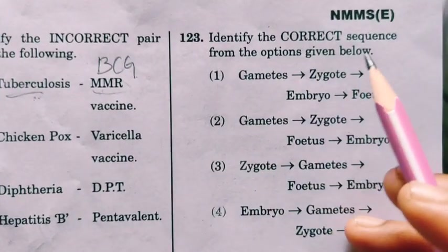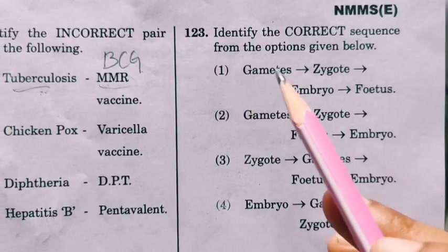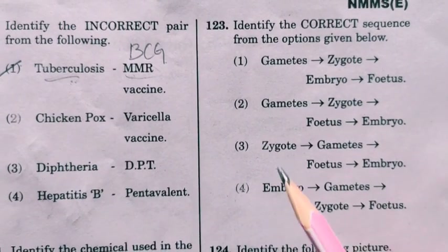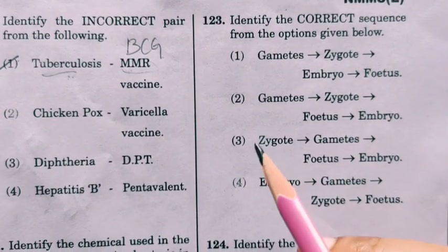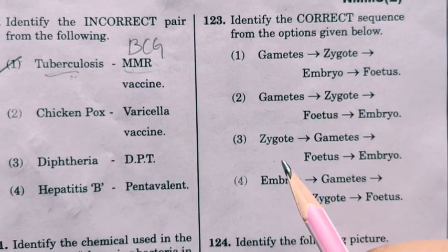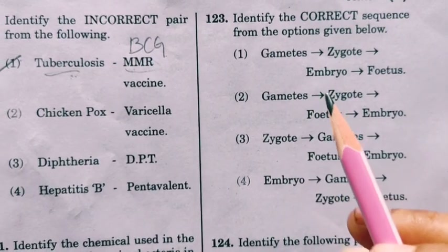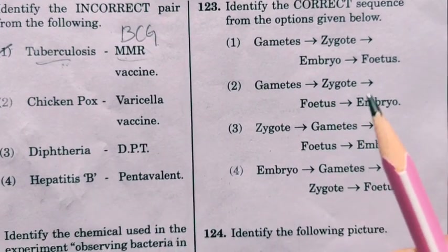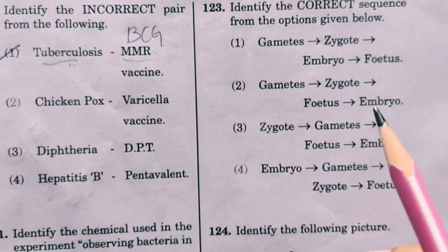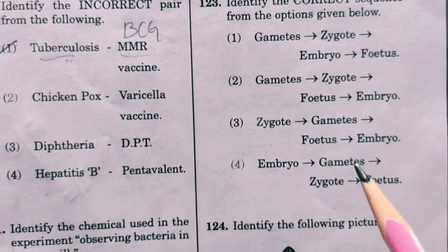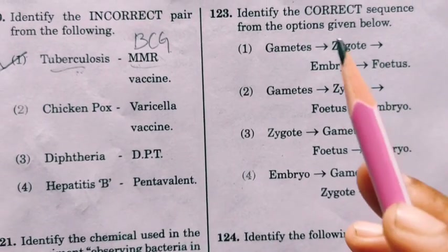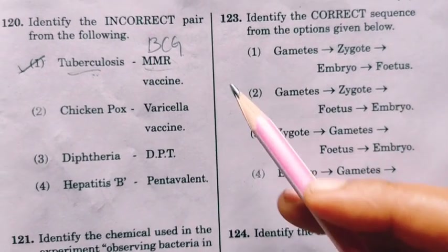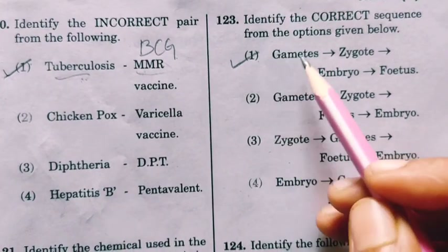Identify the correct sequence from the options given below. First, male and female gametes fuse to form the zygote. The zygote undergoes changes and forms the embryo, and the embryo develops into the fetus. So the first option — gametes → zygote → embryo → fetus — is the correct answer.